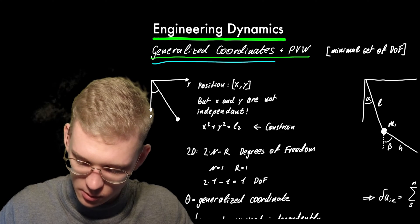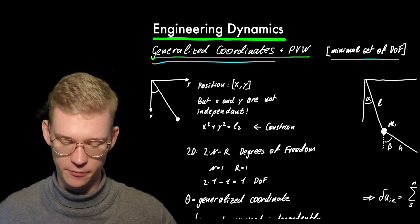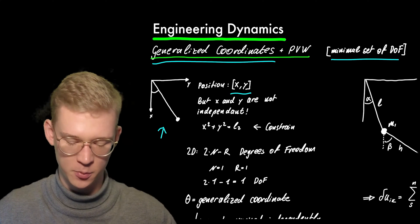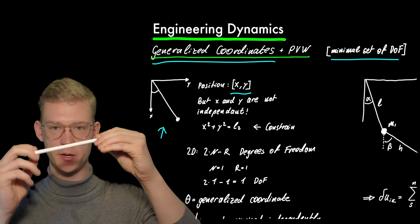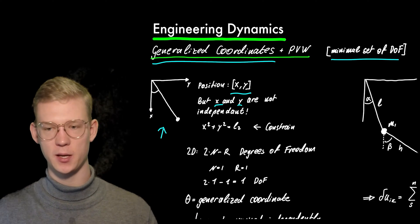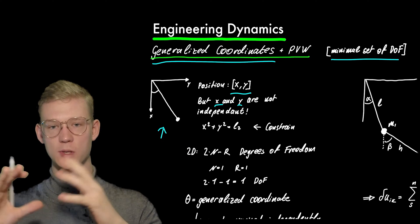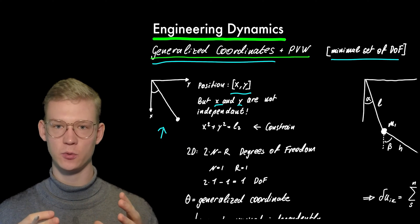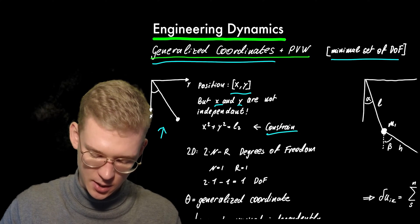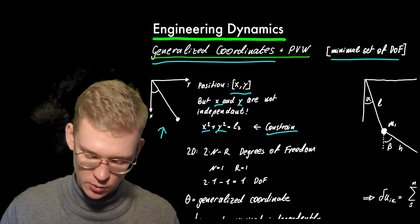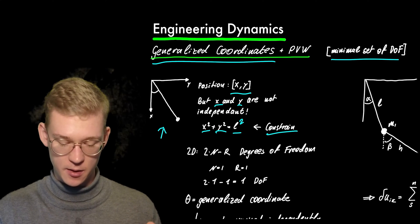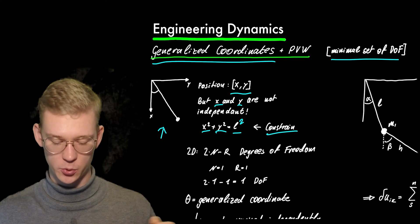Generalized coordinates are also called a minimal set of degrees of freedom. Let's look at our pendulum. We have positions x and y that our body can take, but x and y are not independent. I can choose a random x and a random y, but they always have to be in some relation to each other because we have our constraint: x squared plus y squared equals L squared.